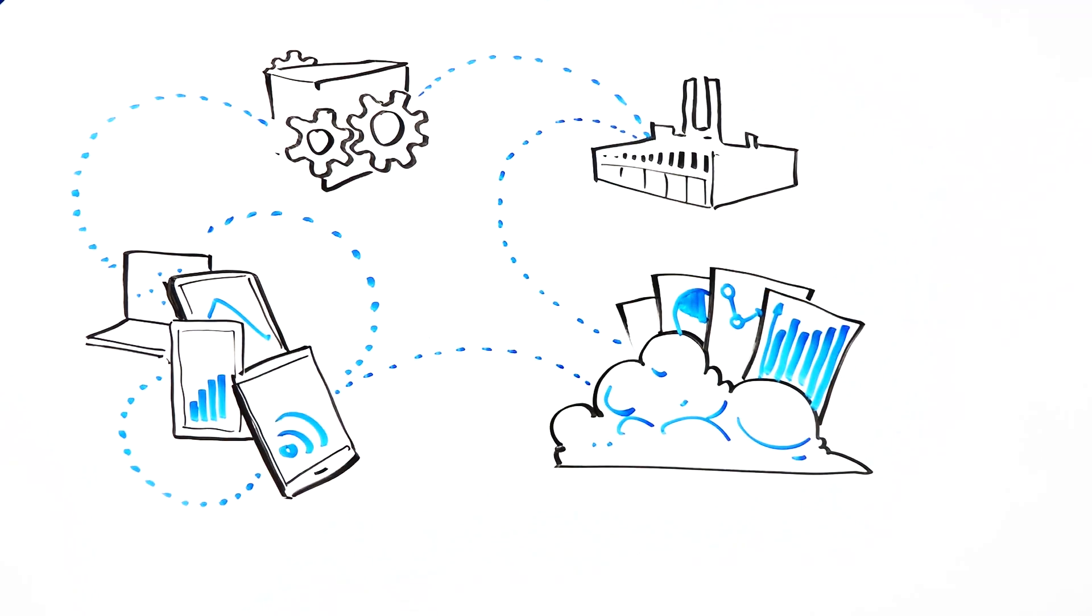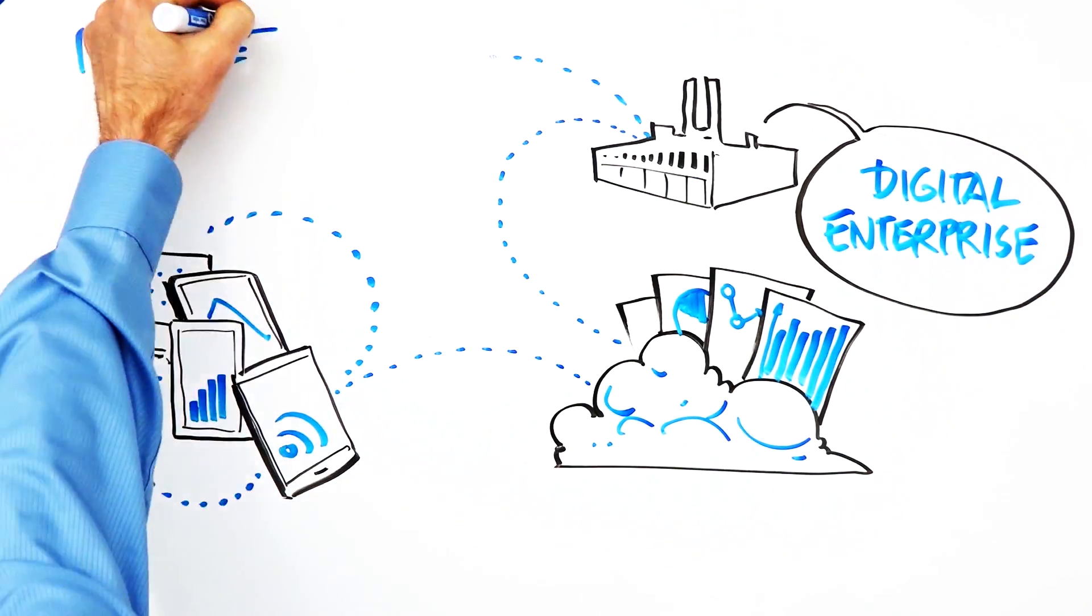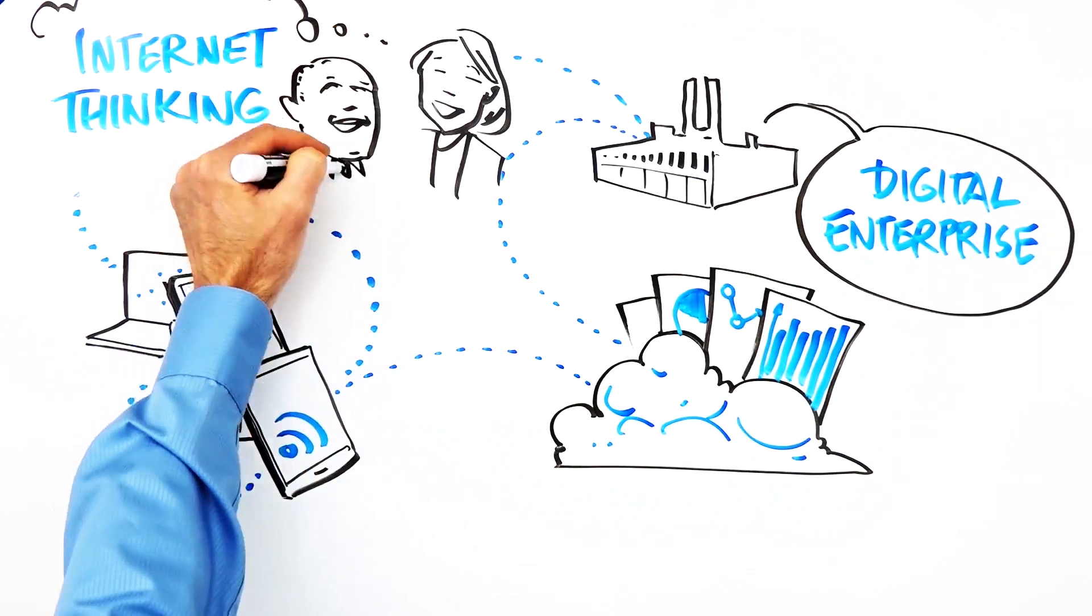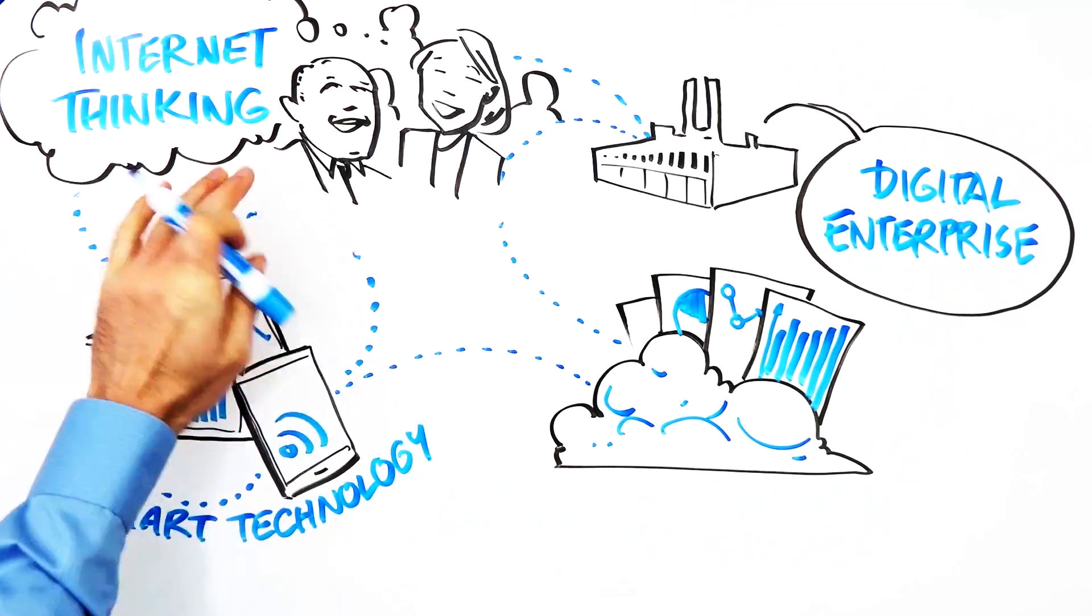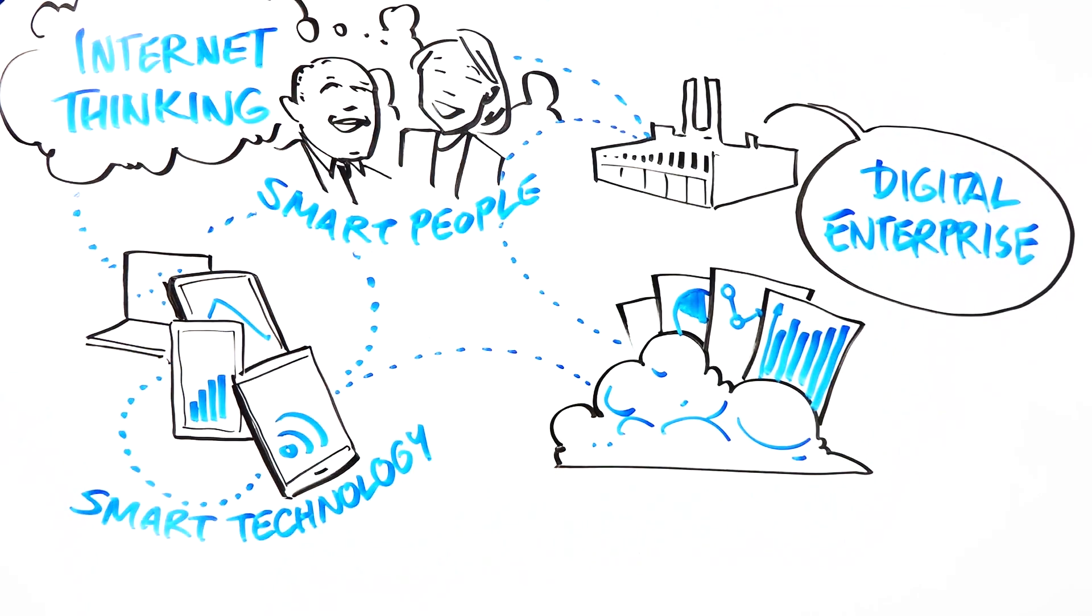Now a traditional manufacturing business can be run as a digital enterprise. Internet thinking. Your people play an equally important part here. Smart manufacturing is equal parts smart technologies and smart people. Your manufacturing is poised for powerful change when you unlock their potential, empowering a new collaborative 21st century business mindset.